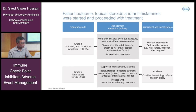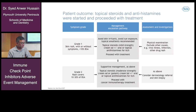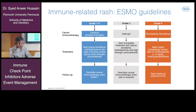Moving on to supportive management: for grade 2 toxicity, the rash occurs in 10 to 30 percent of body surface area (grade 1 is less than 10 percent, grade 2 is 10 to 30 percent). Supportive management includes topical steroids of moderate strength cream twice a day, with oral or topical antihistamines for itching as well. Per ESMO guidelines for grade 1-2 cancer immunotherapy toxicity, you can continue immunotherapy with topical emollients and antihistamines for pruritus and/or topical mild-strength corticosteroids.